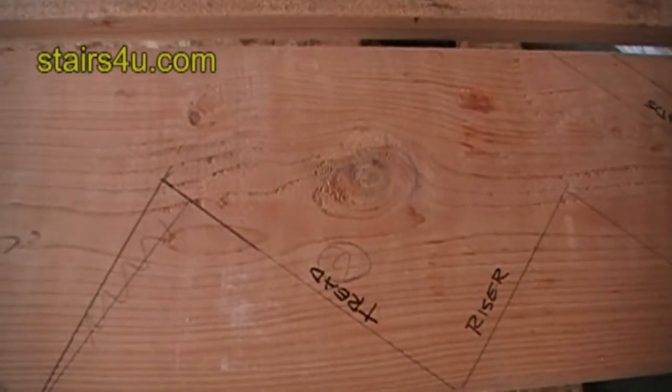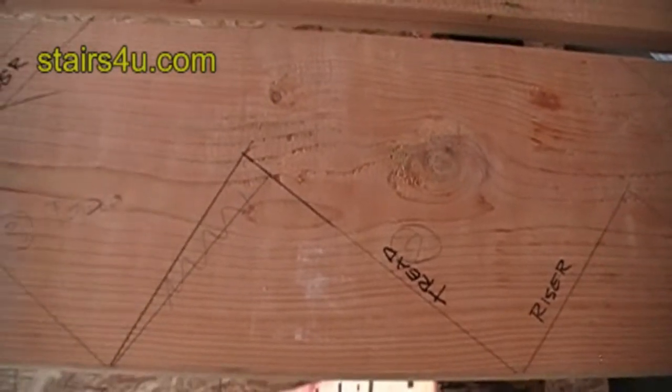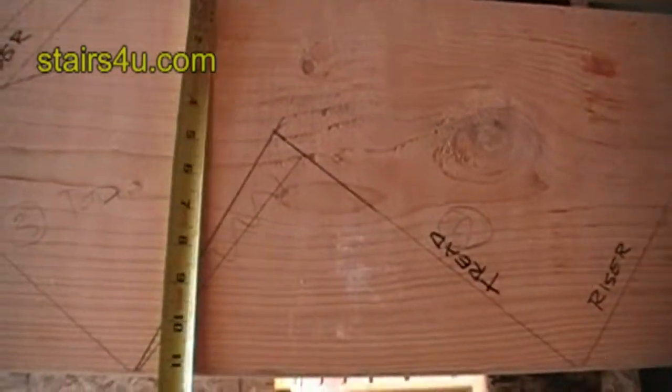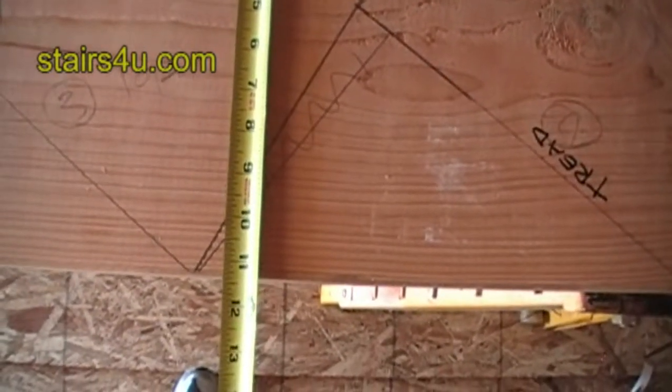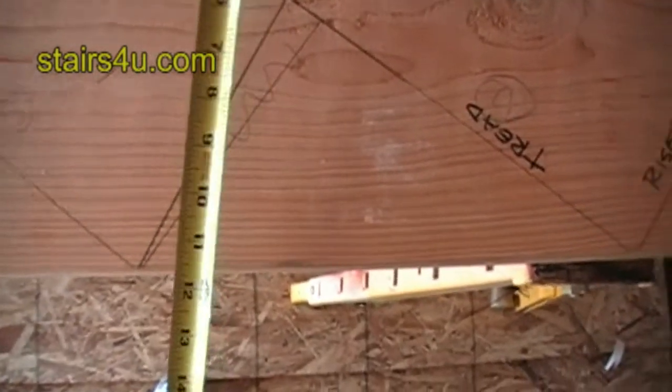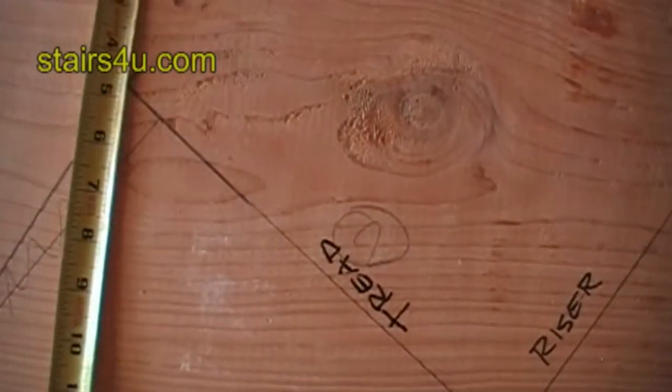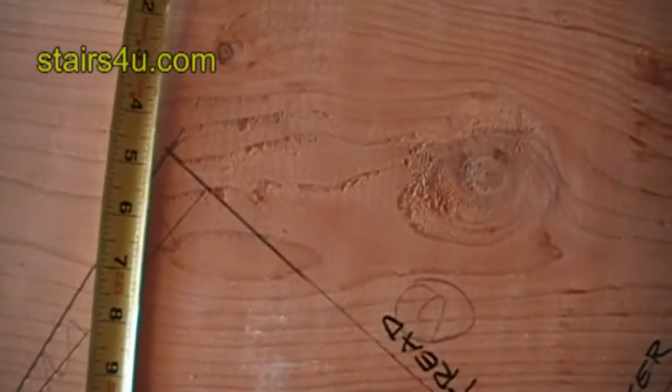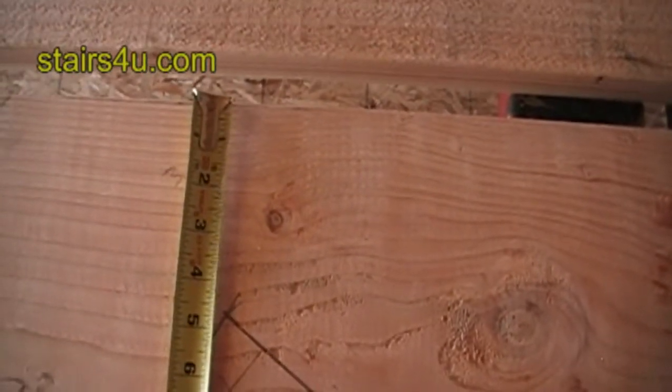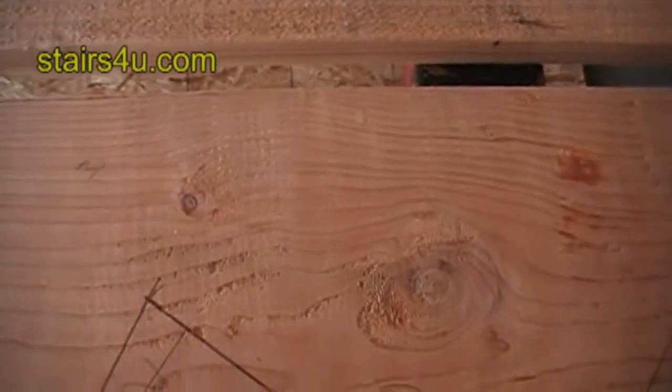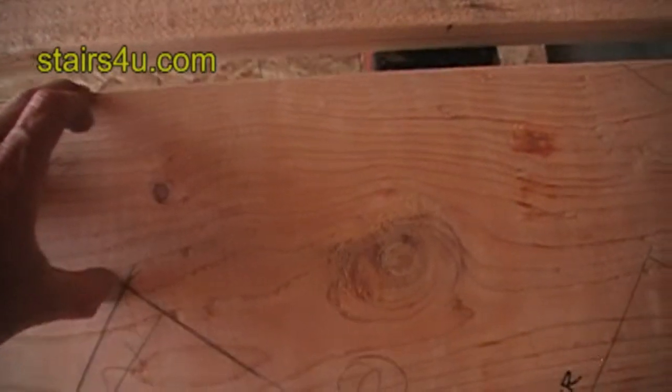Something else to mention is by using a 2x12 for your stair stringer, this is going to give you about four and a half inches of wood left on your stair stringer at the weakest point.